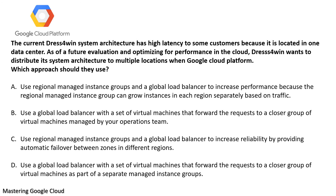Second question: The current architecture has high latency to some customers because it is located in one data center. As a future evaluation optimizing for performance, the company wants to distribute its system architecture to multiple locations on Google Cloud Platform. Which approach should they use? This question is similar to the previous one in discussing performance optimization, but here we already know that an instance group is created in one region and they now want to expand to different regions.